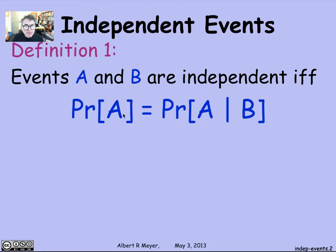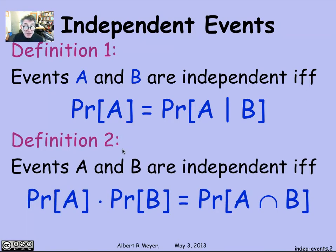Now this is one definition, maybe this is the more intuitive definition, but another definition that's equivalent and is standard is that two events are independent if the product of their probabilities is equal to the probability that they both happen, that is the probability of their intersection.